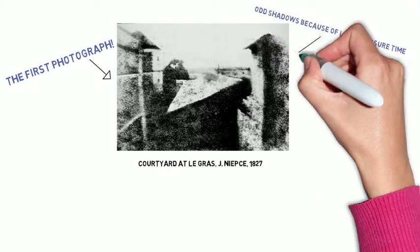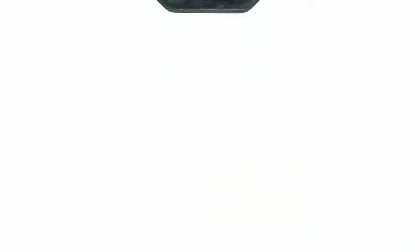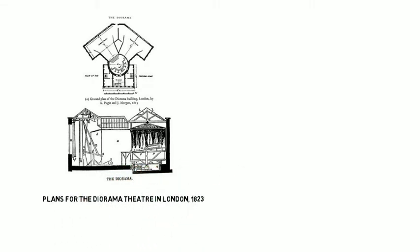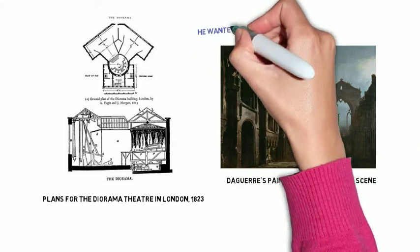In 1829, Niepce and Louis Daguerre formally collaborated. Daguerre was an artist involved with the theater, creating large dioramic backdrops for sets. He sought a more accurate and efficient way of creating these grand scenes. The two worked together until Niepce died in 1833.